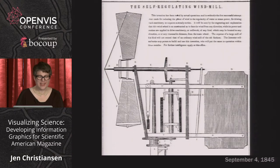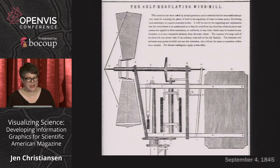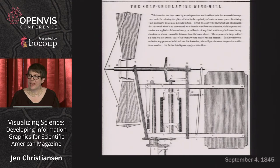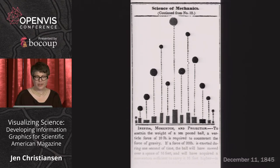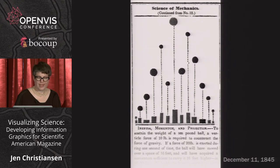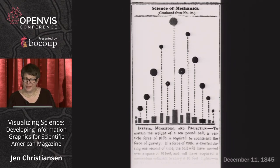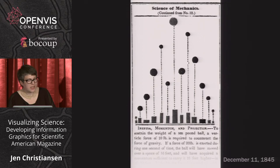Meticulous illustrations of inventions and mechanical properties were a trademark of the early issues. Although many of those diagrams were based on exact measurements, I think this diagram on inertia, momentum, and projection can be considered the first proper data-based chart in the magazine. Perhaps it's a little generous — it portrays an impression of the values more than an exact representation, but it exists specifically to communicate a concept based on measures.